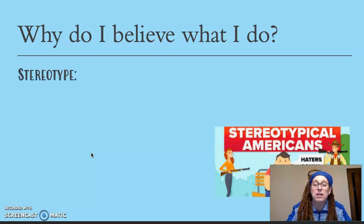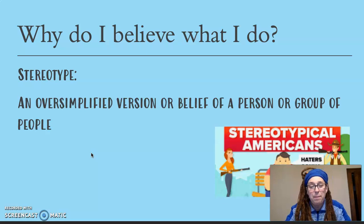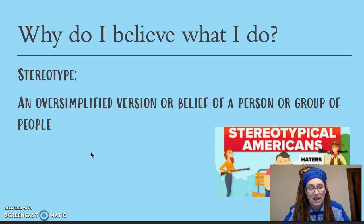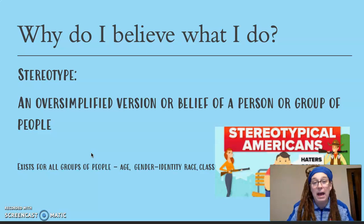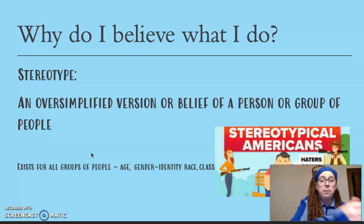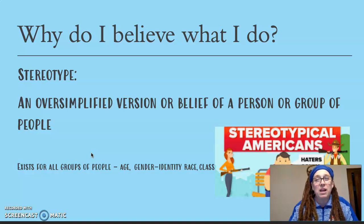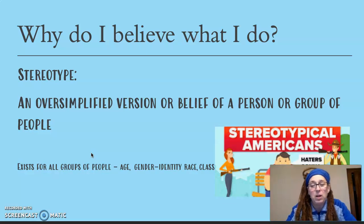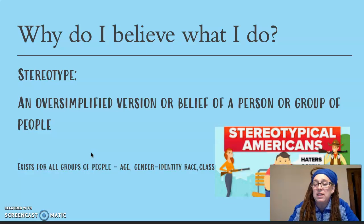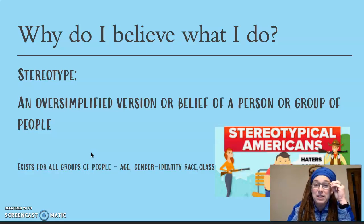Next, we're going to talk about stereotype. A stereotype is an oversimplified version or belief about a person or group of people. These stereotypes exist for everybody — it doesn't matter if it's your gender identity, your age, or your race. They come from a gathering of maybe good or bad qualities associated with a particular group of people. There's an image on the screen here of 'stereotypical Americans' — but we know we're not all like that. So stereotypes are not always the truth; they're an oversimplified version or belief of a person or group of people.